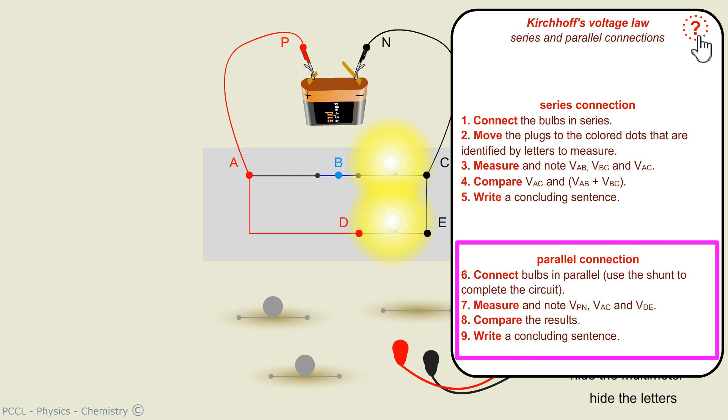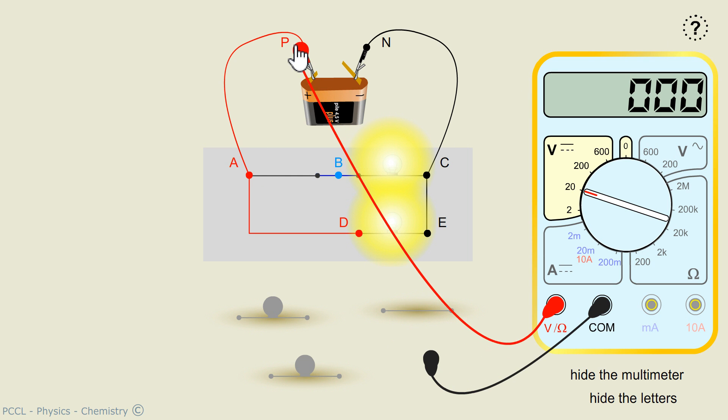And I'm going to measure, therefore, VPN. The voltage across the battery, the supply voltage, which is 4.23 volts.